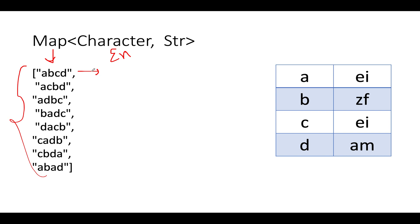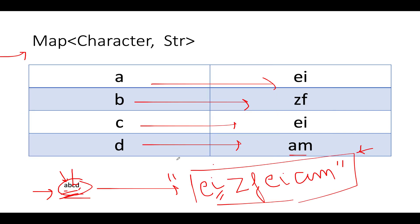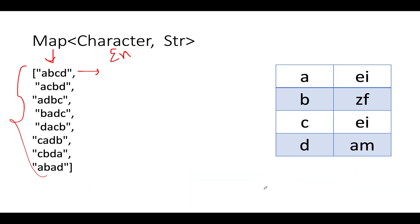I'm calculating the encrypted strings for all elements that are part of my dictionary. Let's get started. ABCD we already see is E I Z F E I AM. Let's go ahead, next we see ACBD.